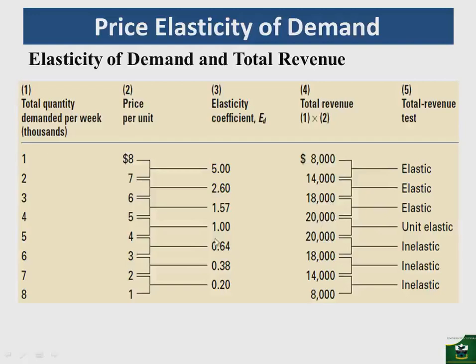At price 4, demand is unit elastic, so the drop in price from 5 to 4 leaves total revenue unchanged at 20,000. As we move into the inelastic region and price continues to fall, total revenue also falls, dropping all the way back to 8,000.